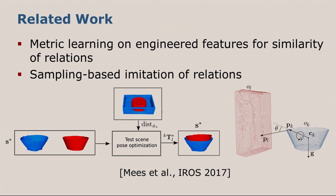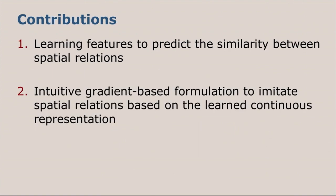However, they relied on hand-engineered features, which you can see on the right here, on which they learned their metric. They used a sampling and grid search-based technique to imitate relations. We overcome these limitations by training the distance metric end-to-end, so we don't need any expert in the loop. The second thing we do is that we propose an intuitive approach, which is based on the gradients, as we have a continuous representation here, to imitate spatial relations.